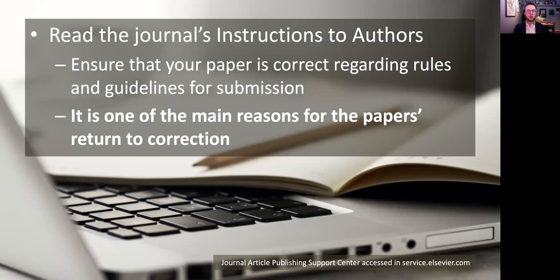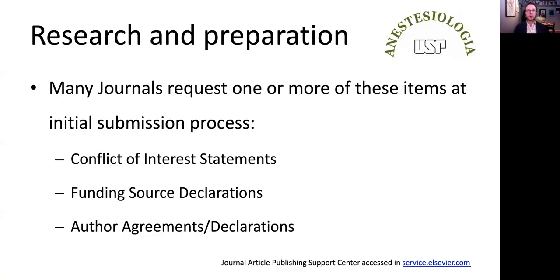It's also very important to read the journal's instructions to authors and ensure that your paper follows the rules and guidelines for submission for that specific journal — not following the instructions to authors is one of the main reasons for a paper's return for correction. Many journals request items such as a conflict of interest statement, funding source declaration, and author agreements at initial submission.